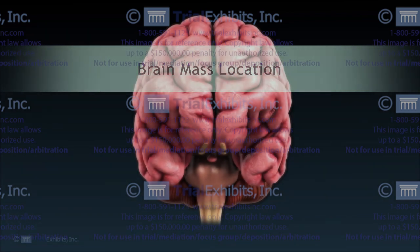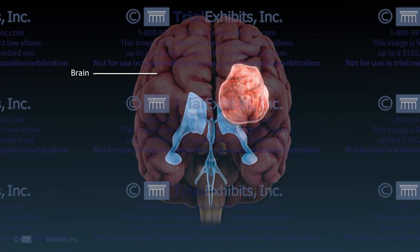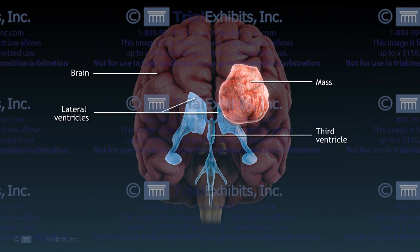There are times when a simple two-dimensional illustration of the anatomy is not sufficient. When the objective is to show the exact size and location of an organ or pathology, it is often necessary to model the anatomy in three dimensions. This case involved a cerebral mass that was directly adjacent to the left lateral ventricle. It was essential for us to show the relationship of the mass to the ventricle, so this 3D model was created.